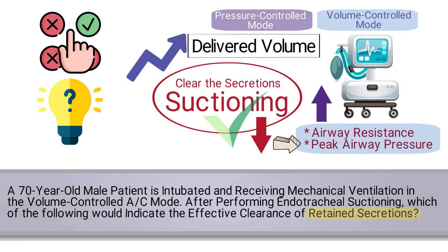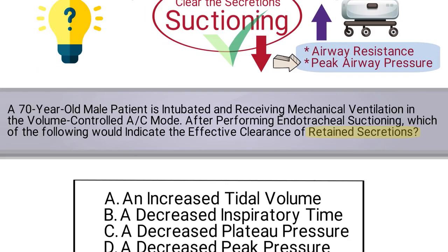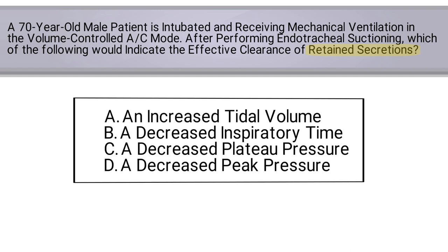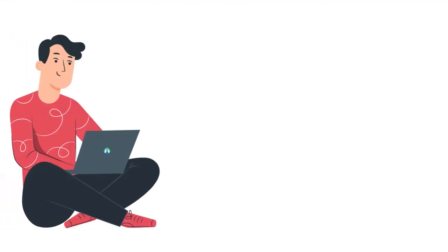That is the key tidbit you needed to recognize in order to answer this question correctly. In other words, you needed to understand the difference between volume and pressure-controlled ventilation. If you were able to do that, then you could easily determine that the correct answer is D: a decreased peak pressure.